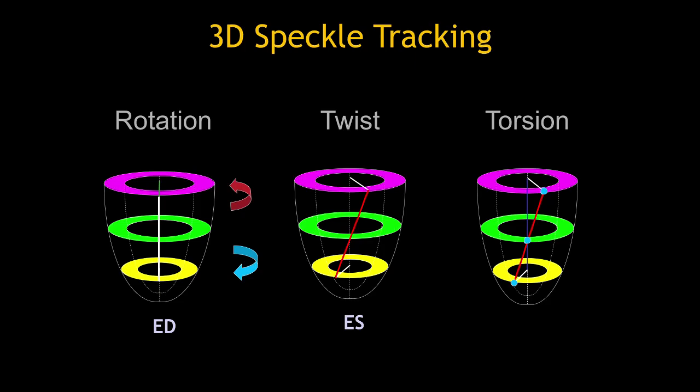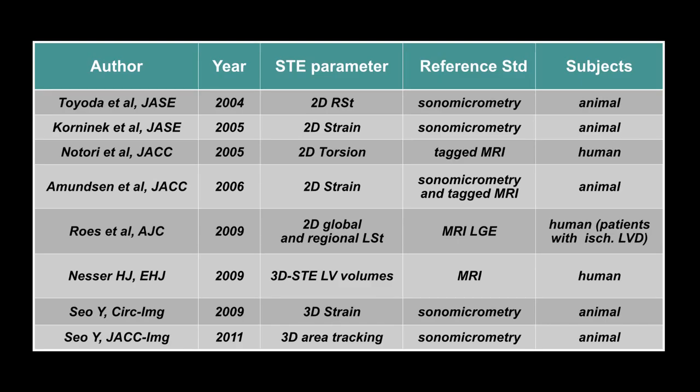The heart also has a wringing motion — almost like twisting a towel — for forward output and maximum efficiency with the least oxygen consumption. One can study rotation, twist, and torsion too, but those parameters are not yet ready for routine clinical use. The other strain parameters are extremely useful and have been validated against independent standards such as sonomicrometry and MRI, showing the numbers obtained are reliable and reproducible.